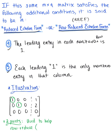Pivots are used to help row reduce using those three basic operations we looked at in the last section: replacement, interchanging, and scaling. Let's think about another example — what are these pivots telling us? What is this matrix telling us?